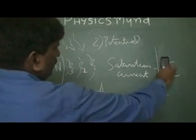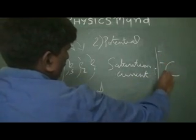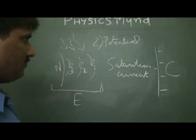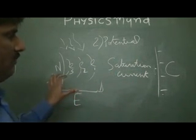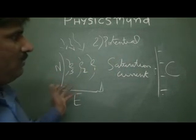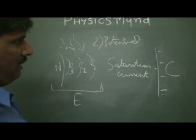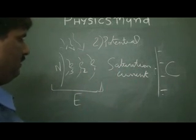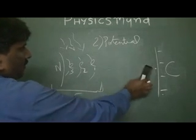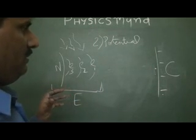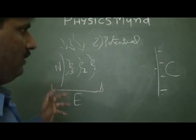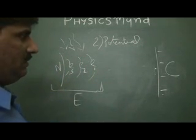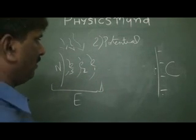If we change the polarity of the collector plate and make it negatively charged, the electrons get repelled. As we increase the negative potential, only the electrons with the maximum energy would be able to reach the collector plate, and after a particular value of potential, no electrons would be able to reach it at all. The potential at which there is no flow of electrons from the photoelectric plate to the negatively charged collector plate is called the cutoff potential.